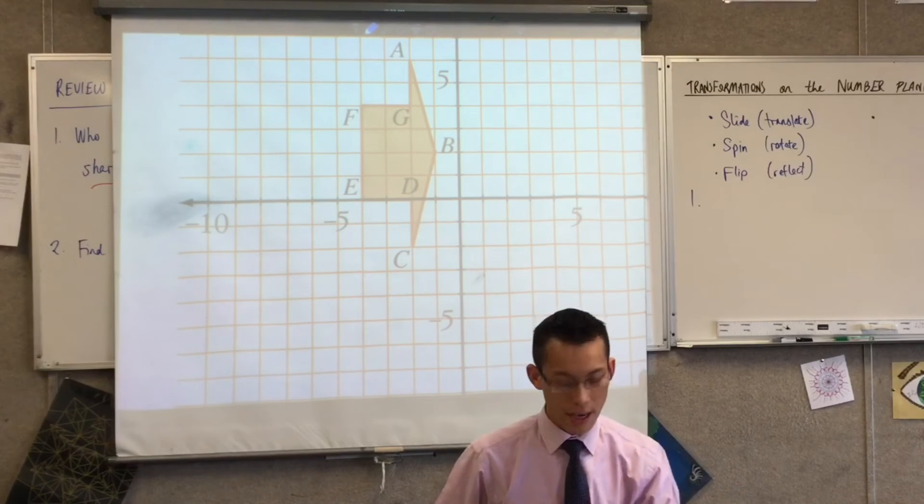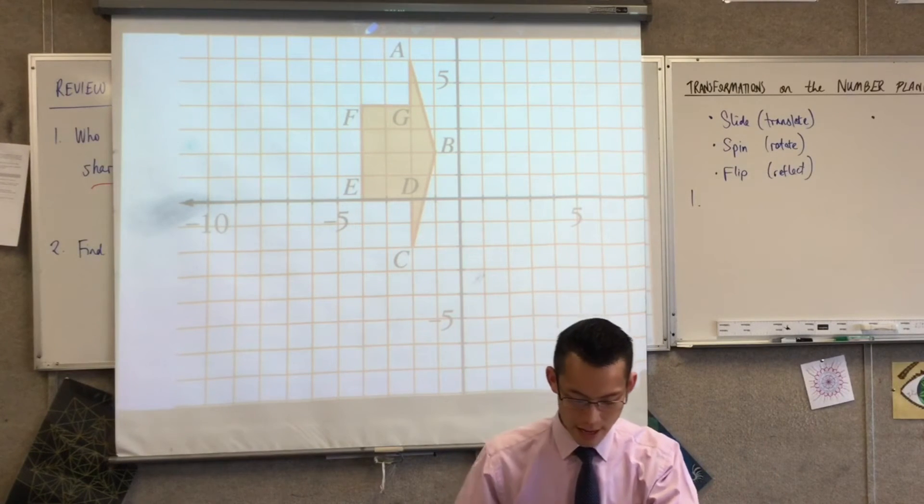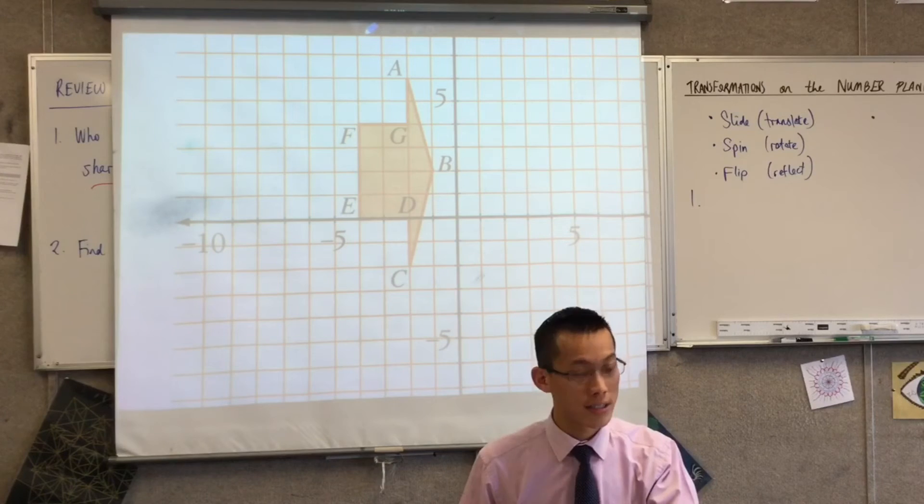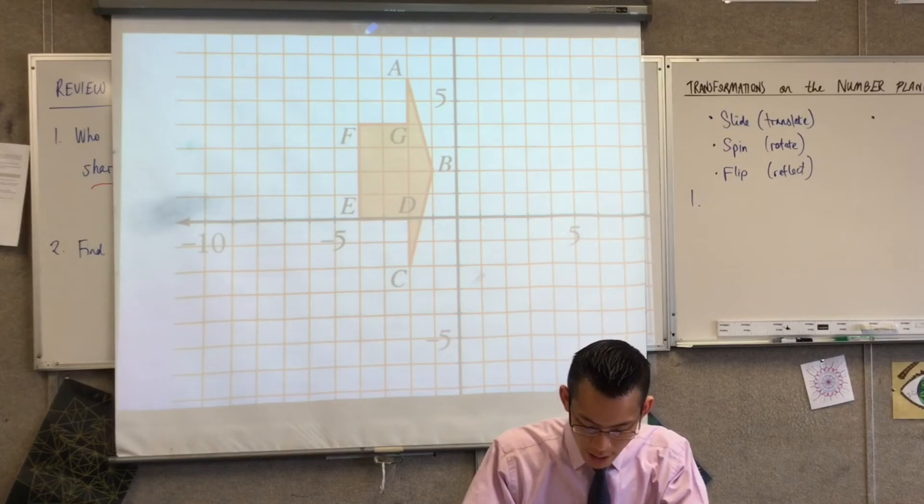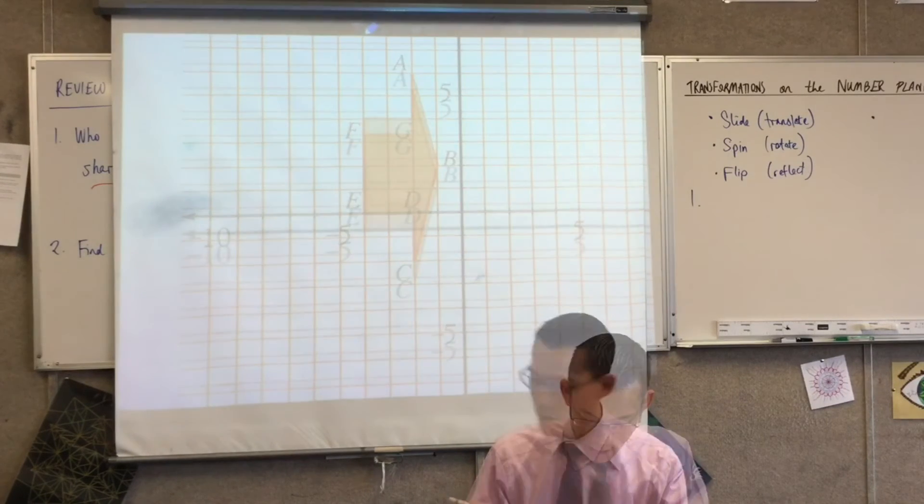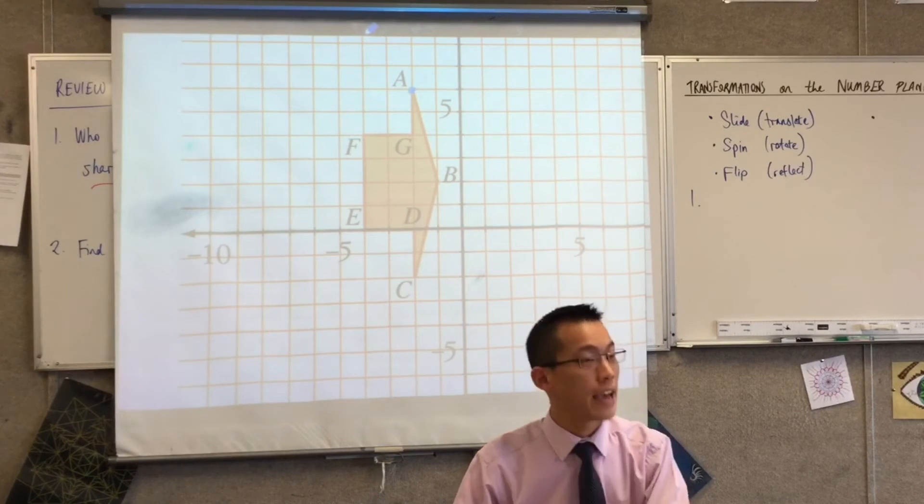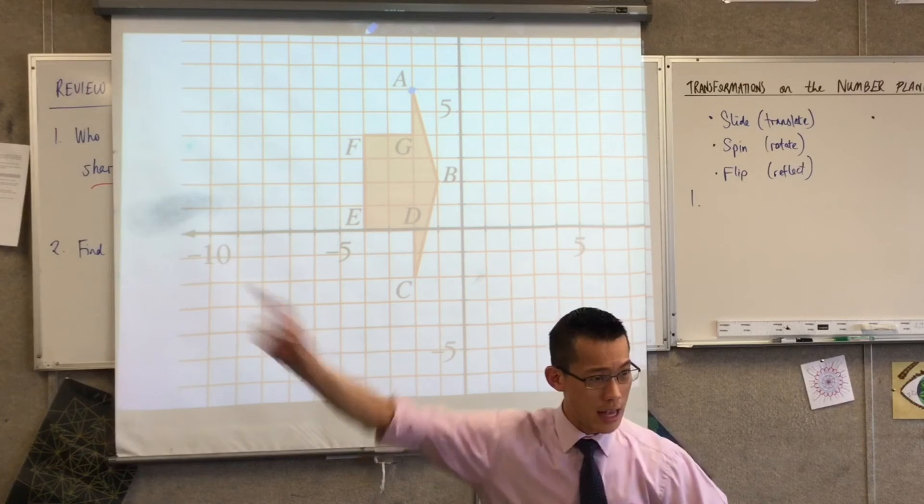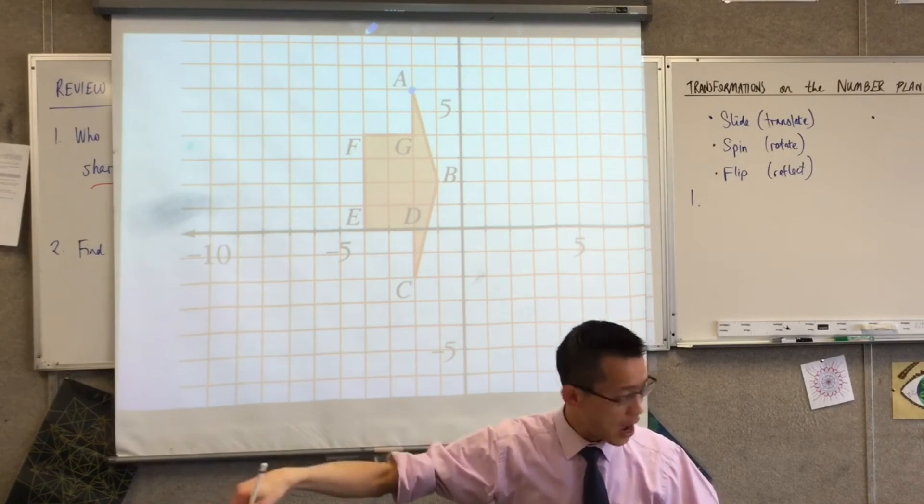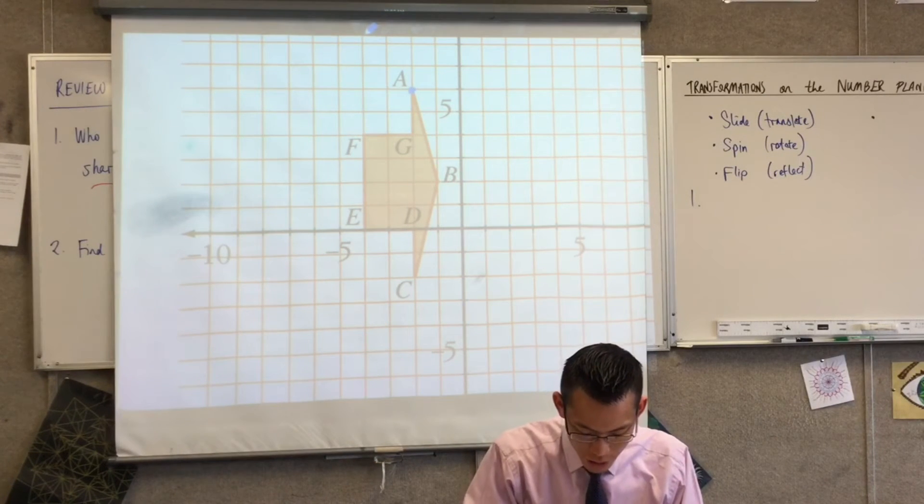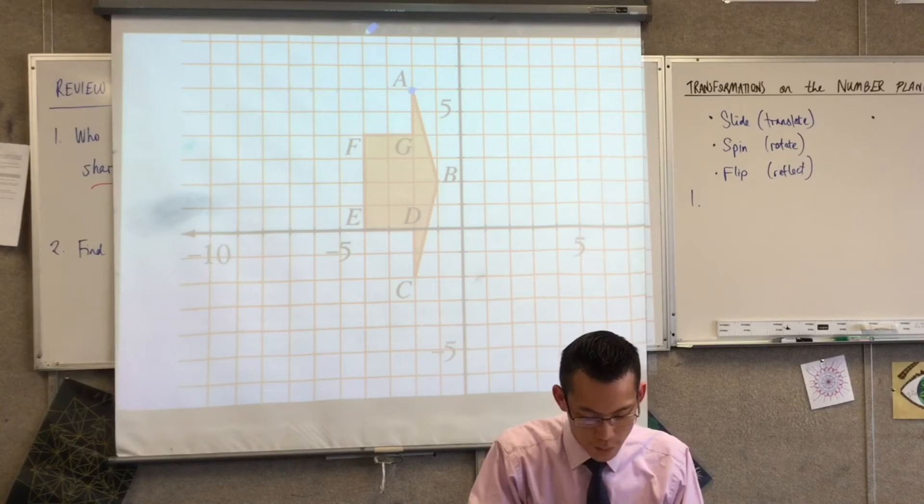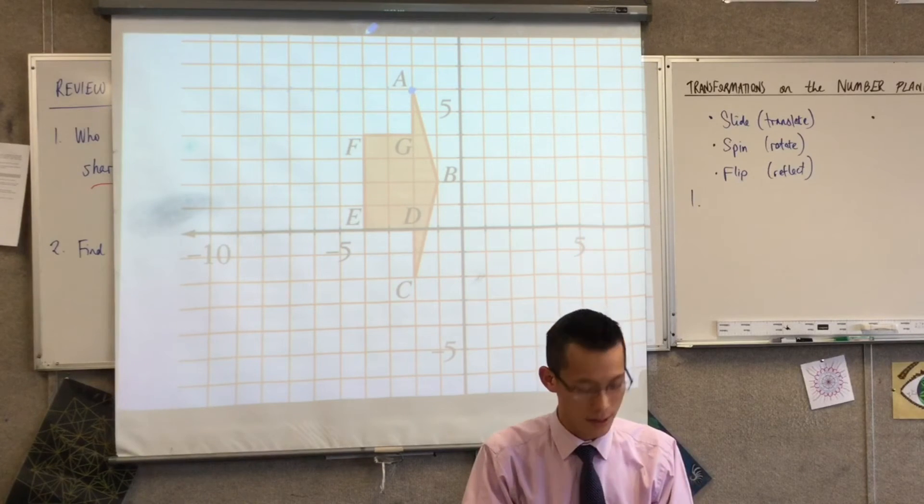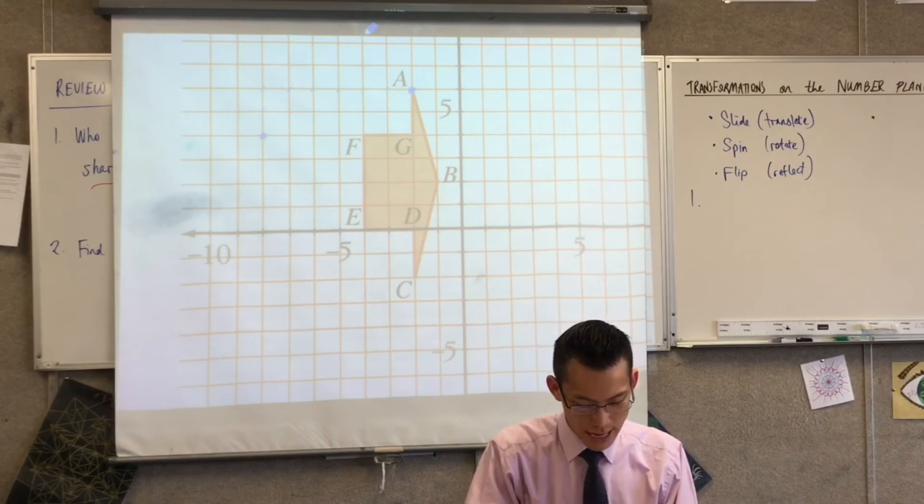They said six left and two down. So my advice to you is take it point by point. Okay, so let's just be alphabetical. I'm going to start at A. So you can see, I'll do it. There we go. Okay, so you can see there's A, right? So I'm going to move it. What did they say again? Six to the left and two down. Okay, so I'm going to go one, two, three, four, five, six to the left. One, two down.